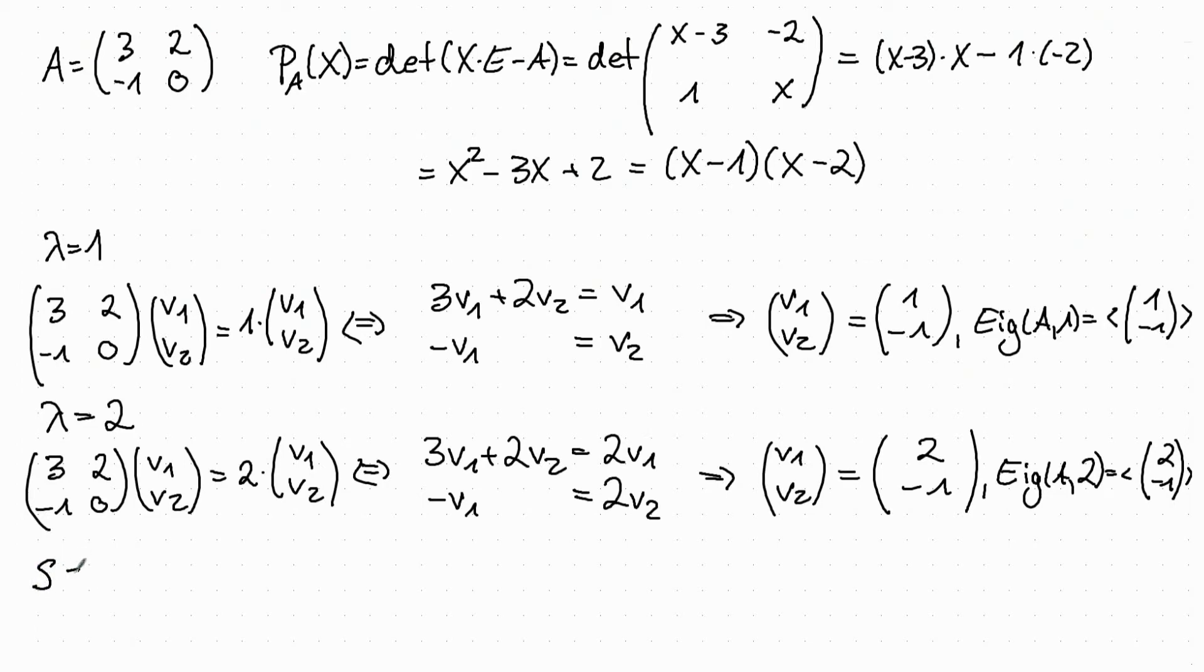We can now define our base change matrix S which is just the eigenvectors as columns. The only further thing to do is to invert S. So we have our base change matrix S which has this vector as the first column and this vector as the second column.